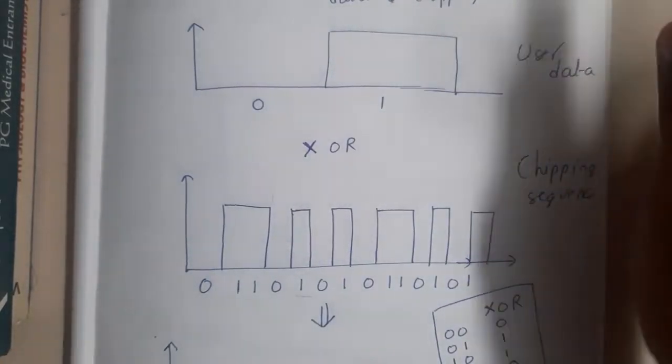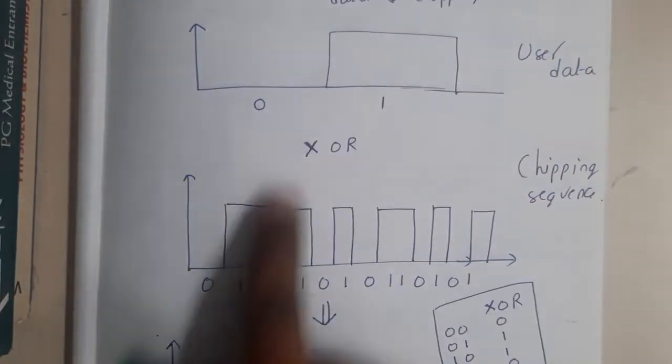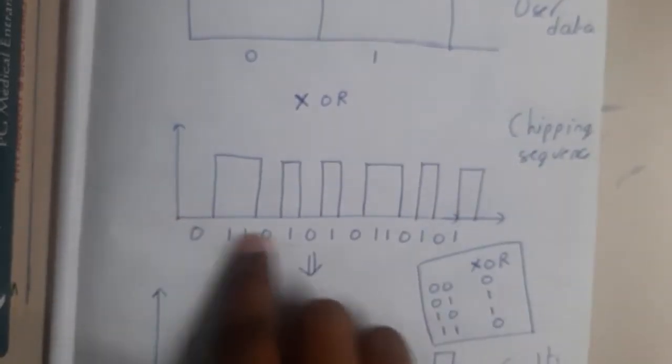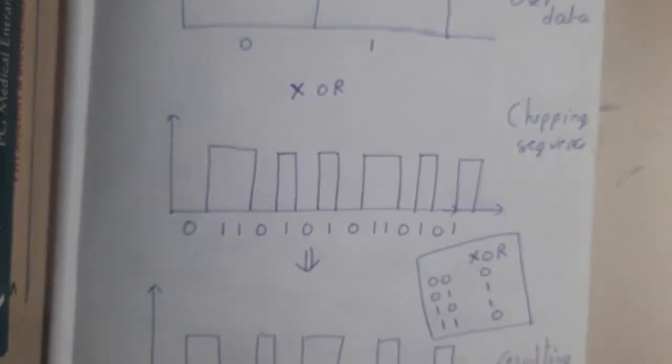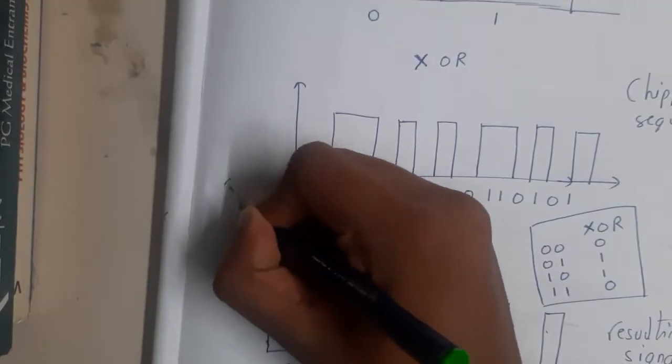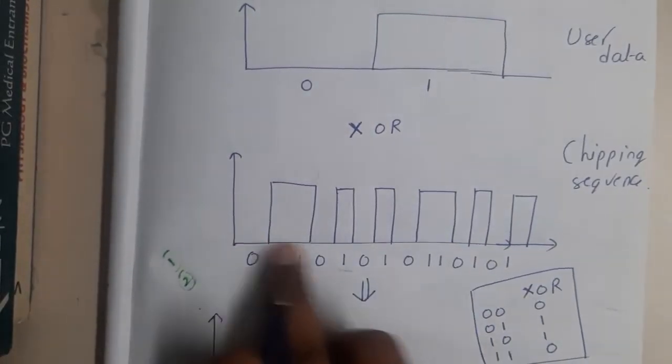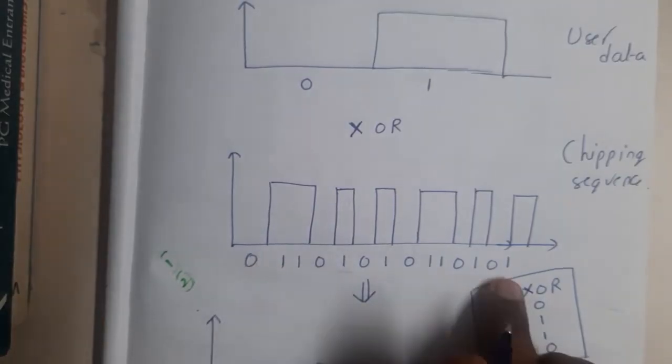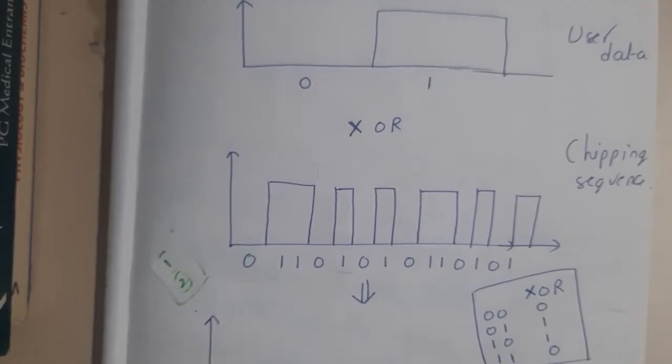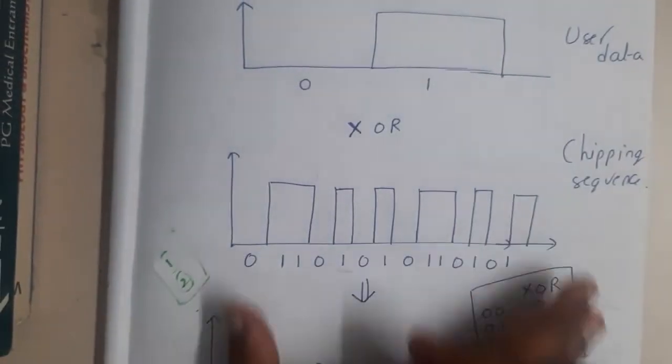Once I got the chipping sequence, I will do XOR operation with the user data. Perform XOR operation between the user data and chipping code. In some books, they have two bits, so take half and perform XOR with zero for the first half, and one for the second half. In some books, the method is different. Use whichever method your teachers taught you. I thought the halving method is better.